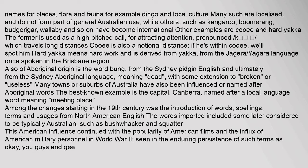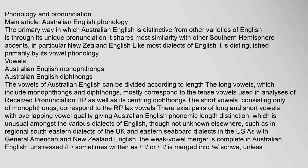The primary way in which Australian English is distinctive from other varieties of English is through its unique pronunciation. It shares most similarity with other Southern Hemisphere accents, in particular New Zealand English. Like most dialects of English, it is distinguished primarily by its vowel phonology.